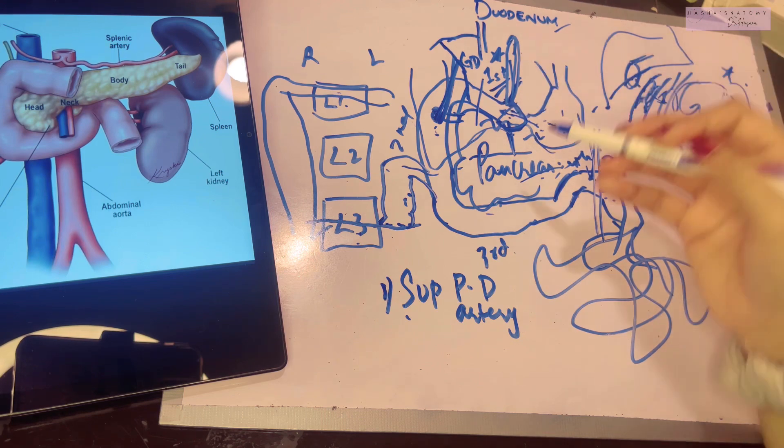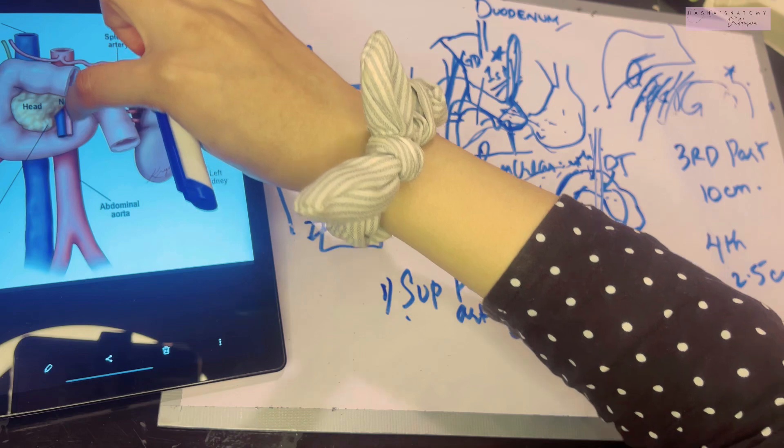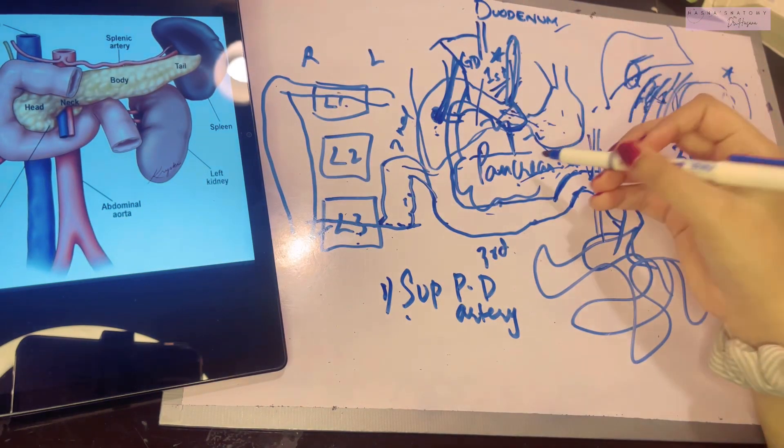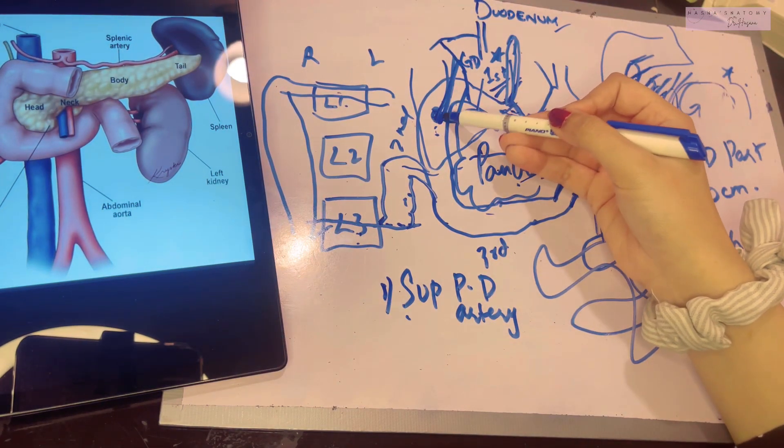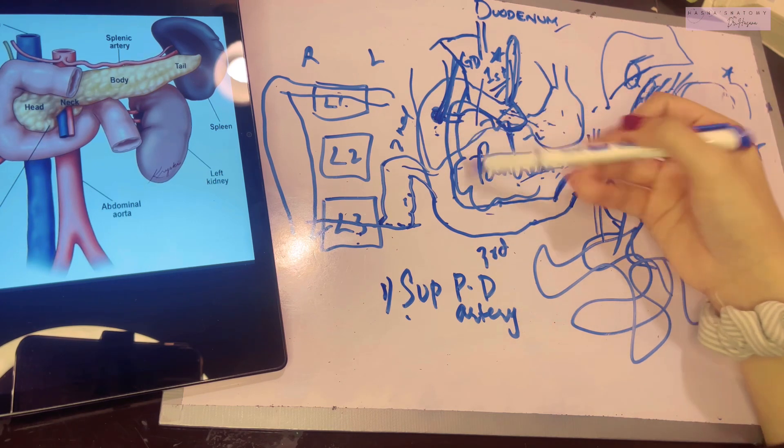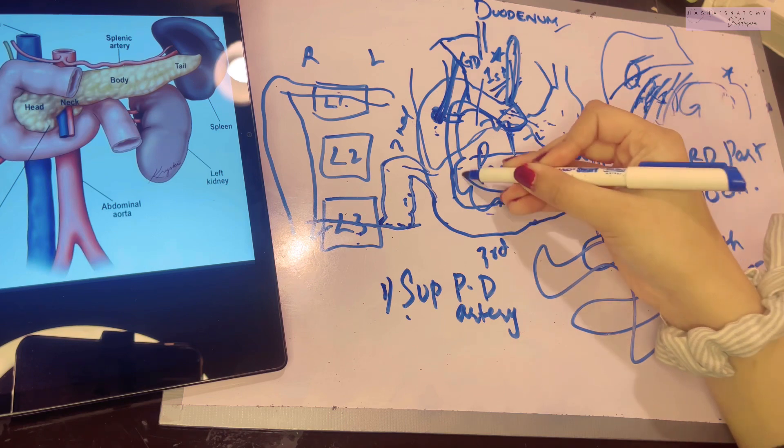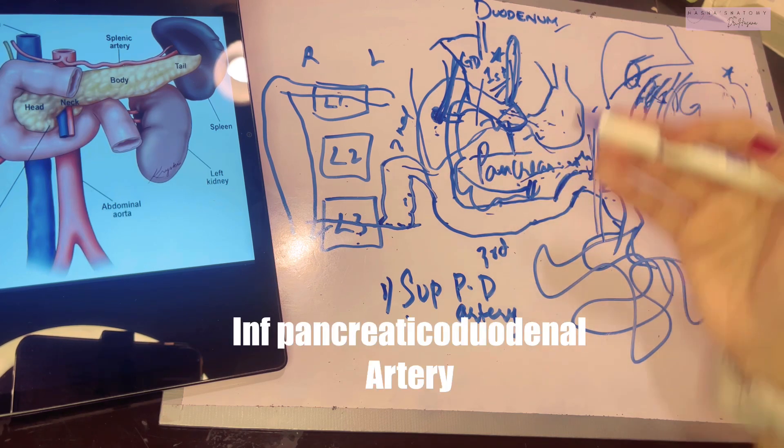The superior mesenteric artery, as you can see here, there's a superior mesenteric artery coming from the aorta. This superior mesenteric artery, because after the opening of the bile duct, the duodenum is supplied by the midgut derivative blood supply, which is the superior mesenteric artery gives a branch called the inferior pancreaticoduodenal artery.